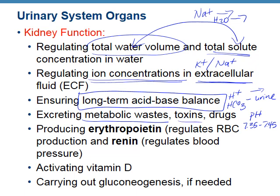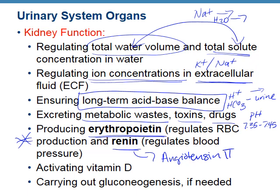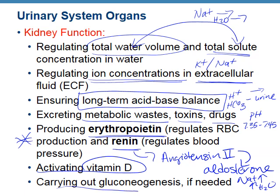The kidneys also excrete metabolic waste, toxins, and drugs. Remember hormones — EPO is produced by the kidneys to help regulate how many red blood cells you're creating. And then renin: remember, renin regulates blood pressure via angiotensin 2, which triggers aldosterone secretion, causing us to reabsorb more sodium and then more water. The kidneys can also play a role in activating vitamin D and can carry out gluconeogenesis if needed. Lots of stuff going on with the kidneys.